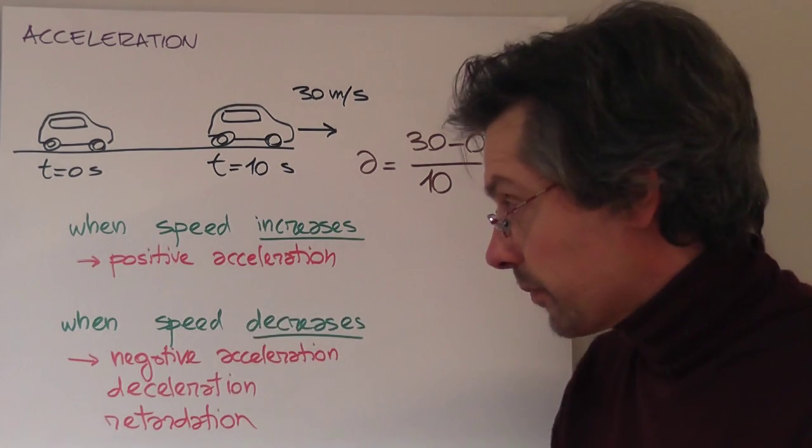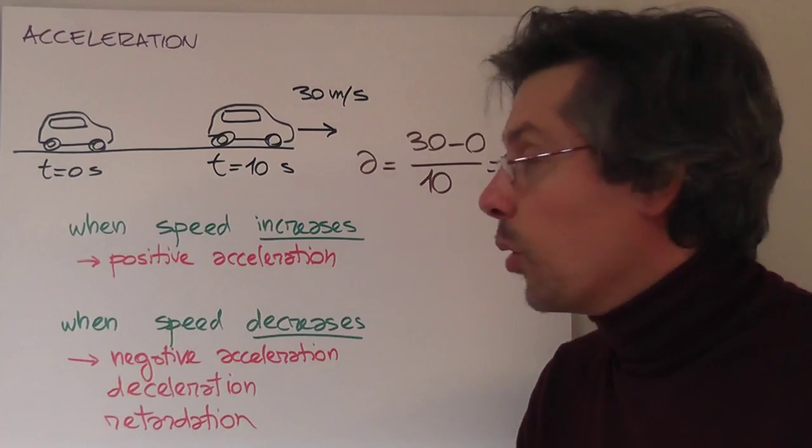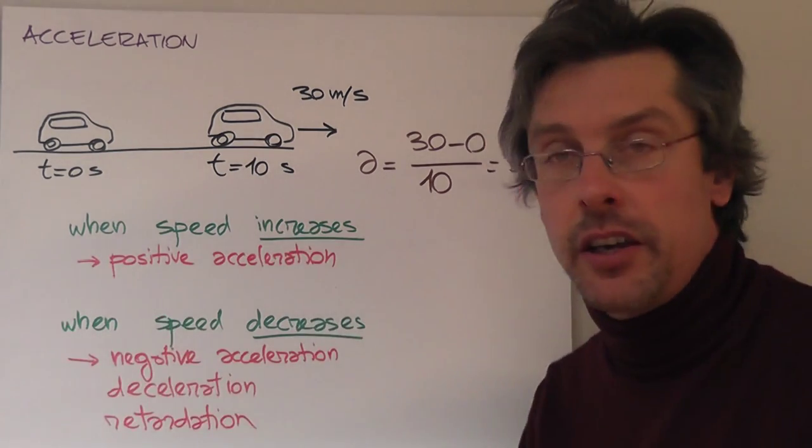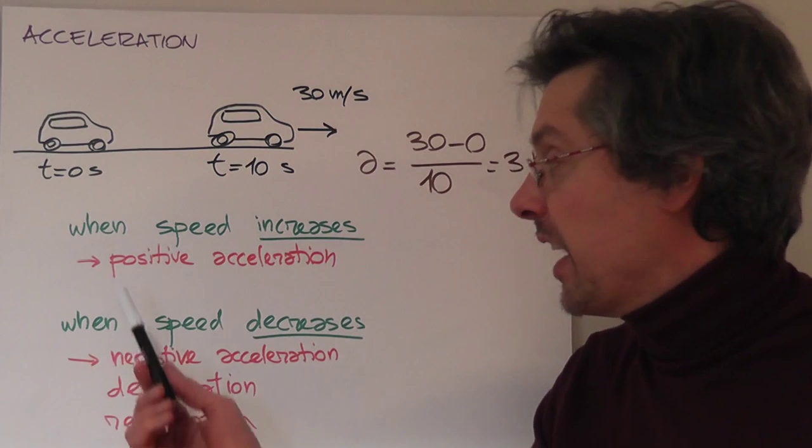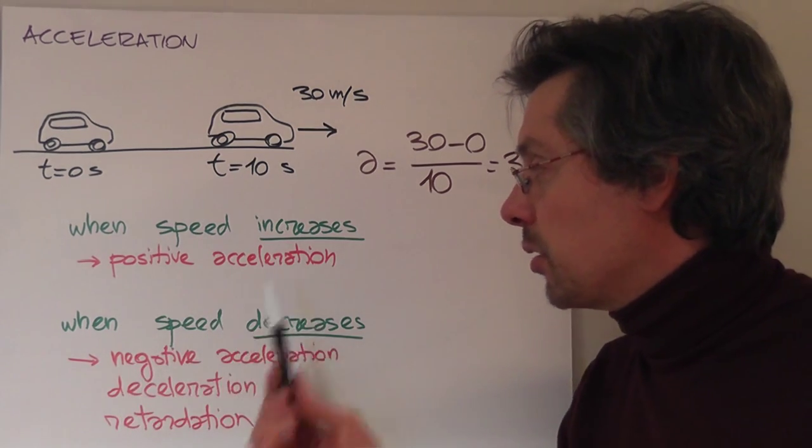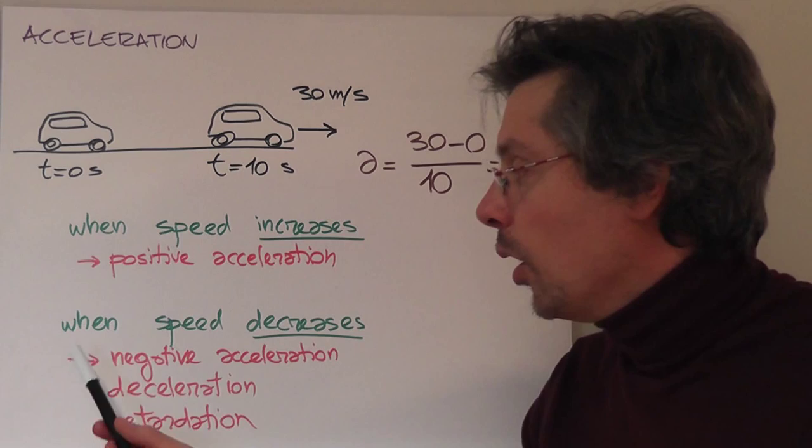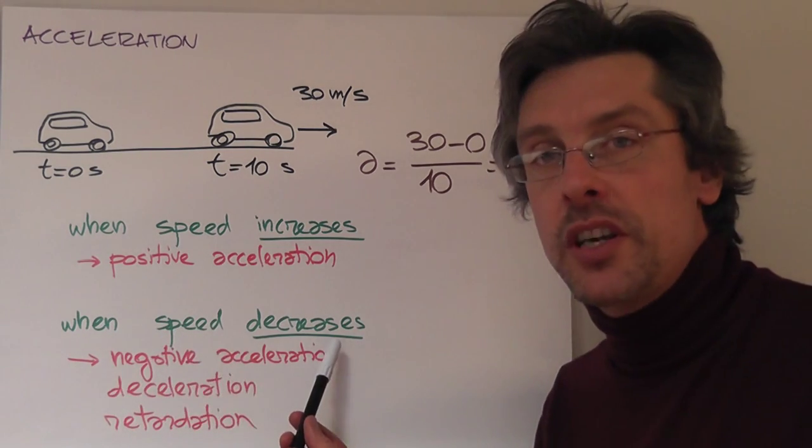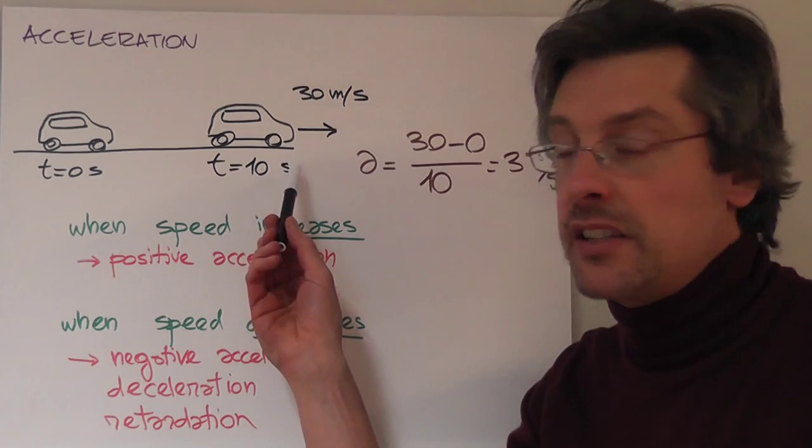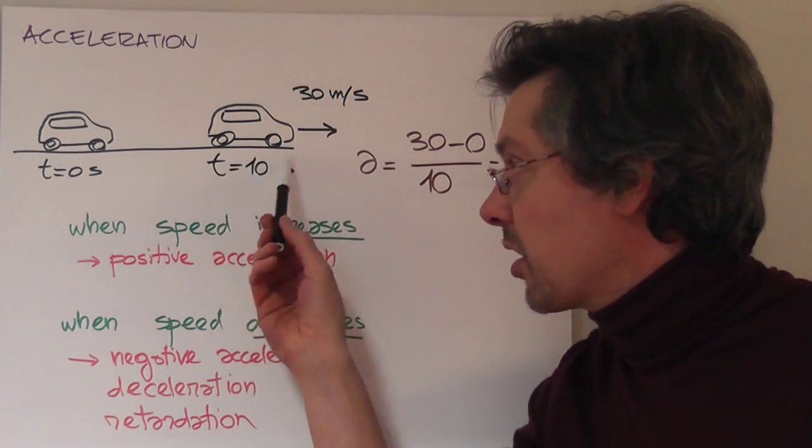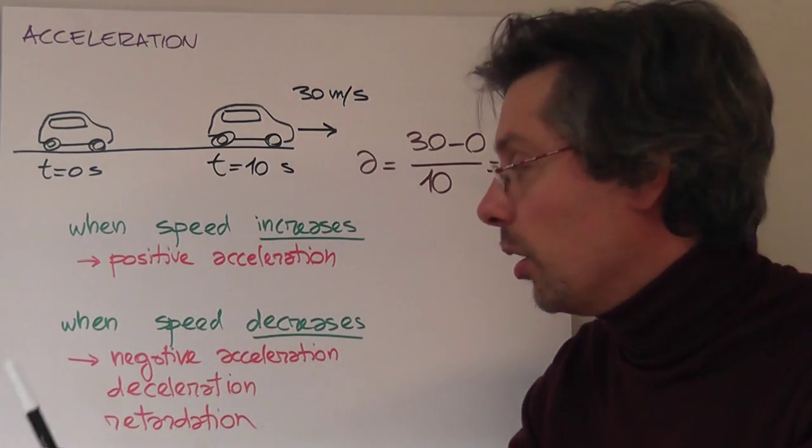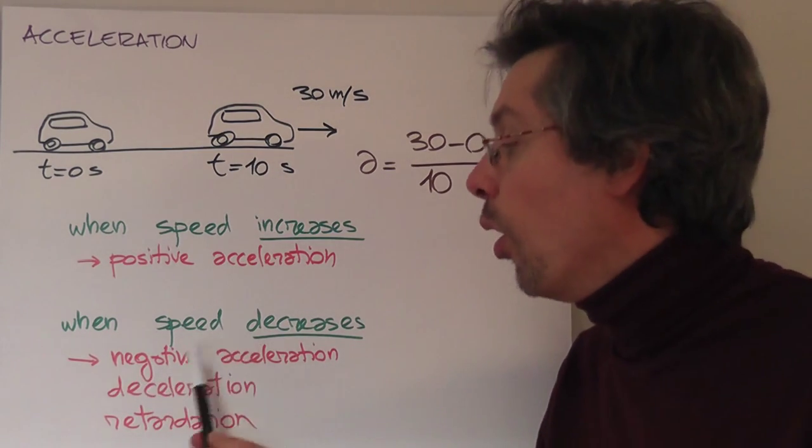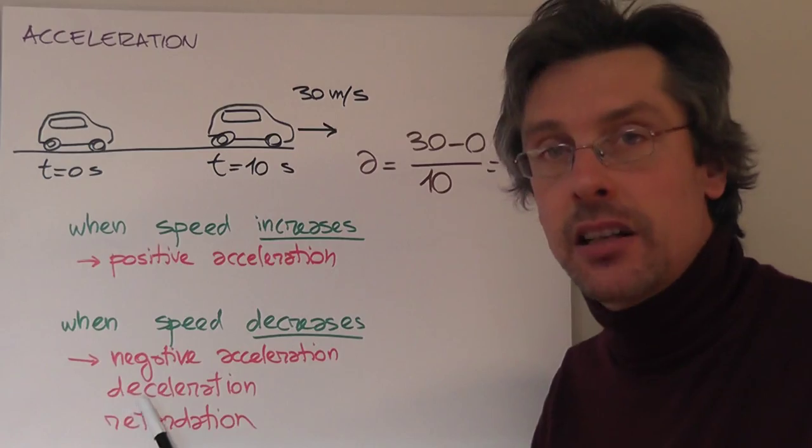Now some wording. In general, when we have an object that has an increasing speed like this car here, we say that the object has a positive acceleration. On the other hand, when an object slows down, so when the speed decreases, for instance let's figure again this car slowing down to a halt, we say that the object has a negative acceleration.